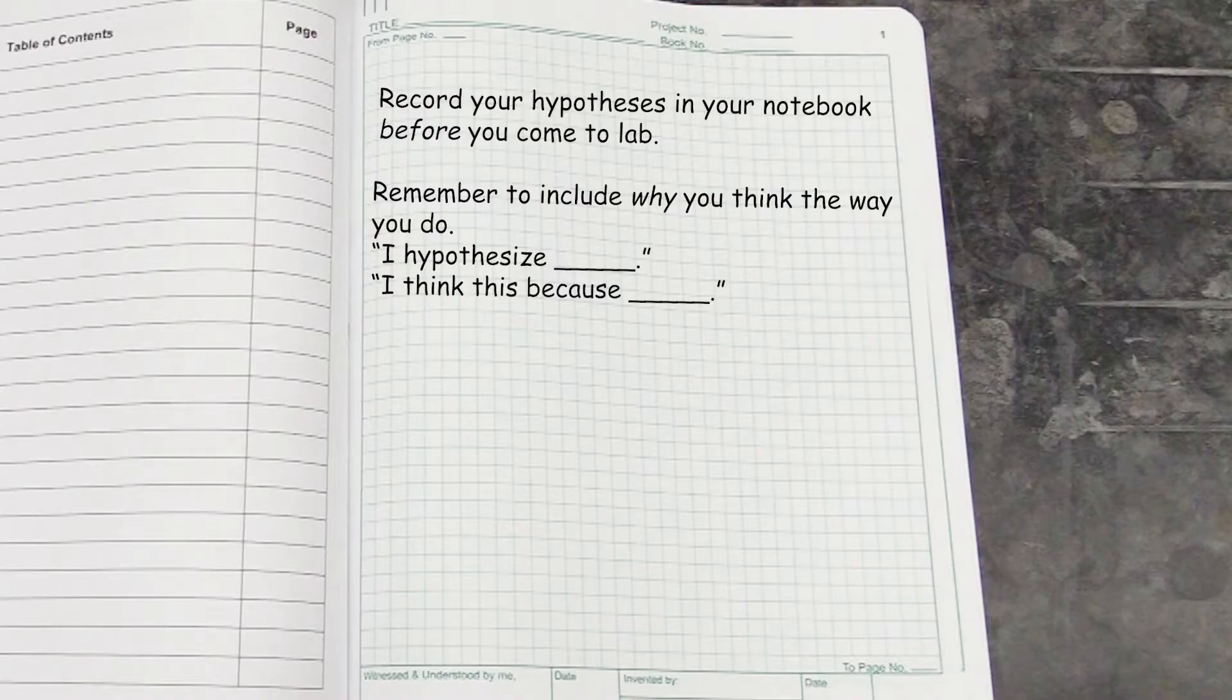A complete hypothesis includes the rationale behind it, so when you write yours, make sure you include the reason why you think the way you do. When you get to lab, your TA will check them and offer feedback as needed.